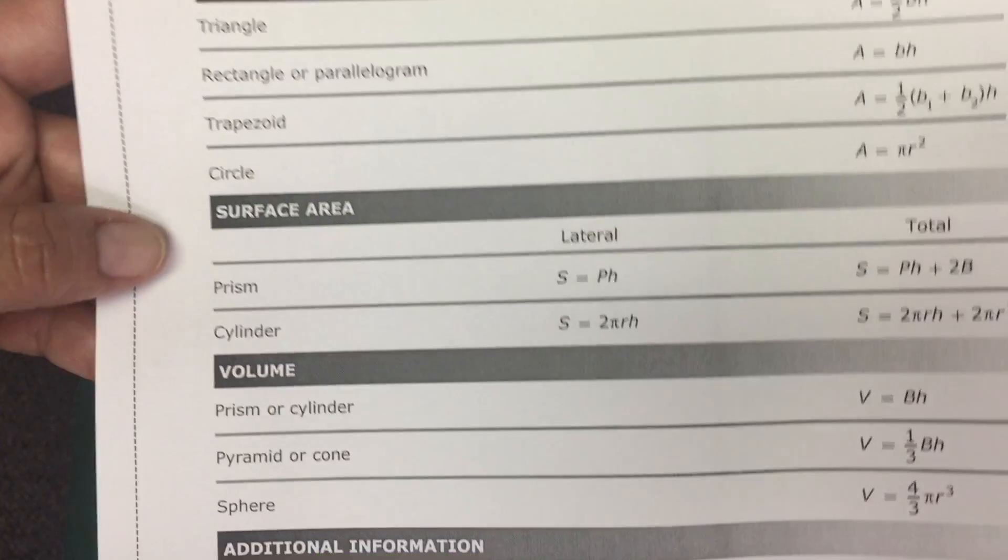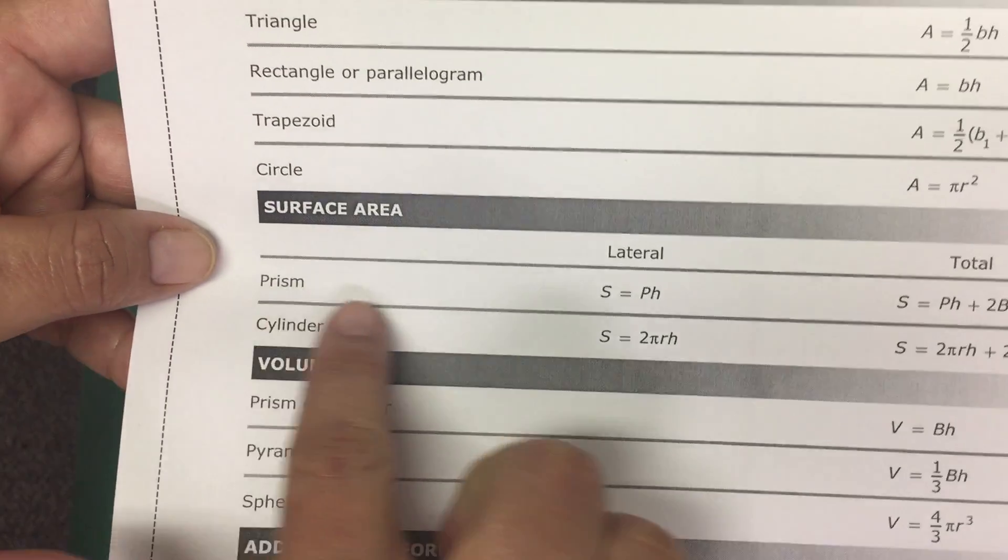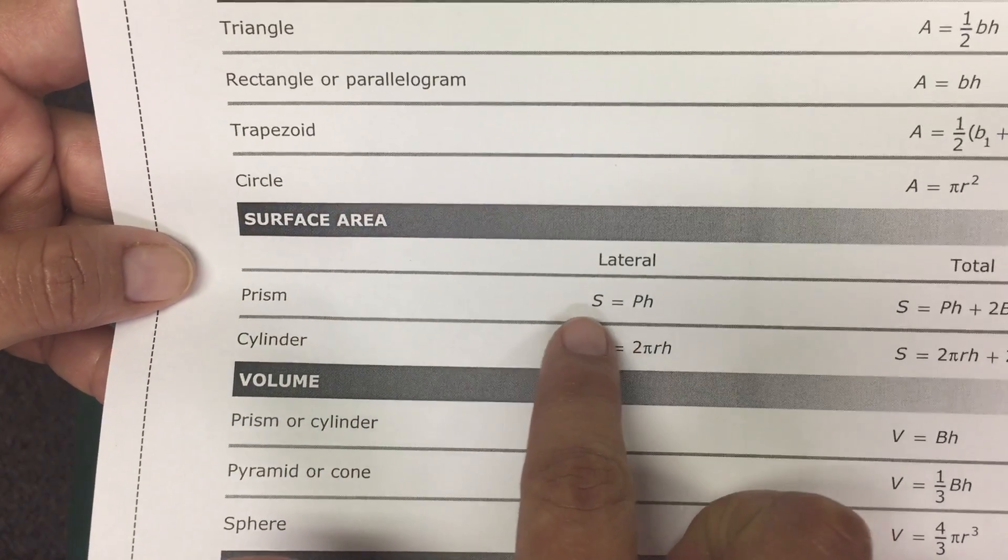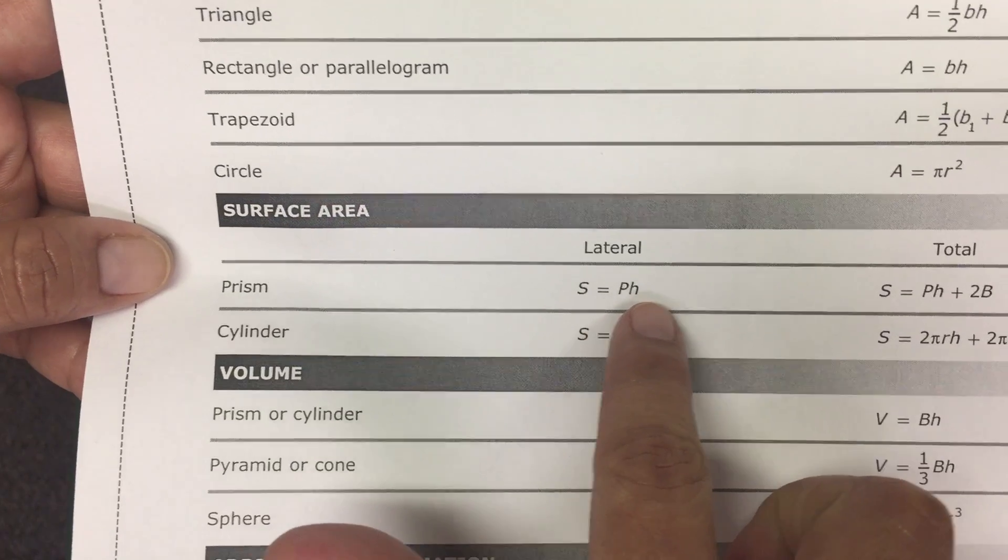So if we look at the reference material sheet, the lateral surface area for a prism is S equals capital P times H.